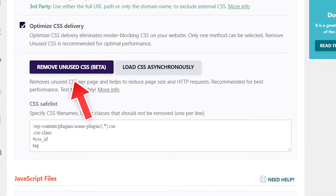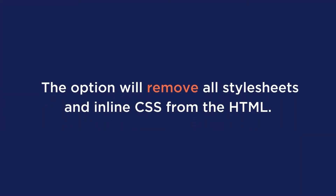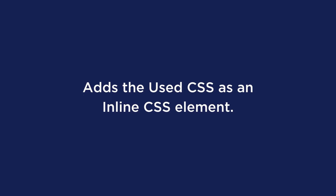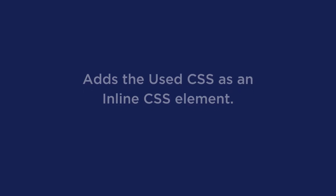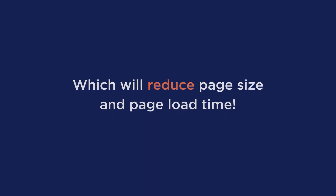WP Rocket offers the option to remove unused CSS in just one click. This option will remove all stylesheets and inline CSS from the HTML, and it will add the used CSS as an inline CSS element, which will reduce page size and page load time.